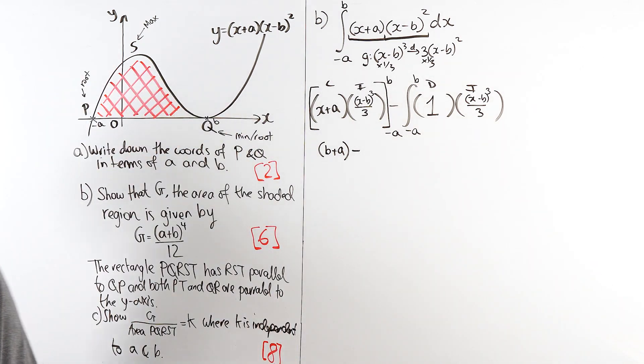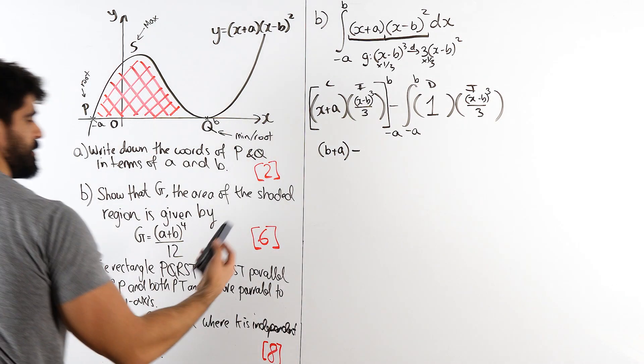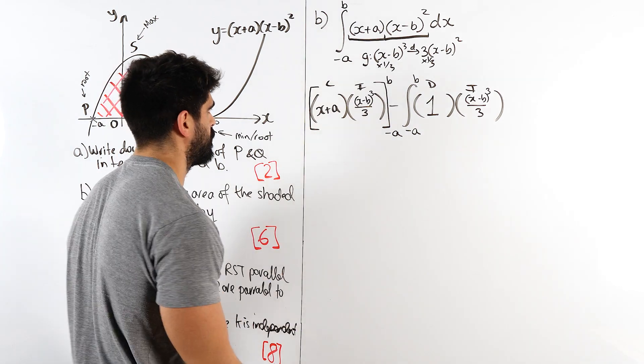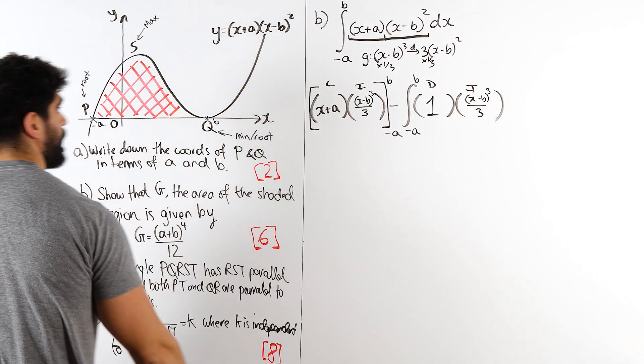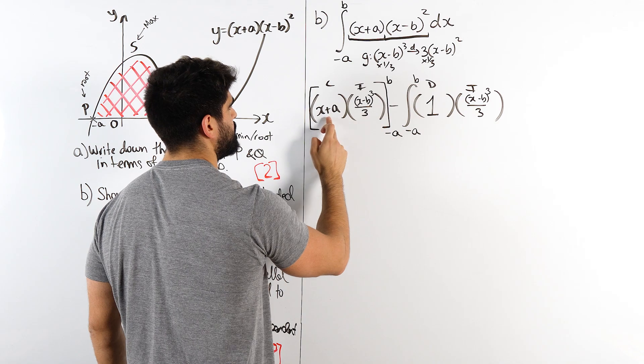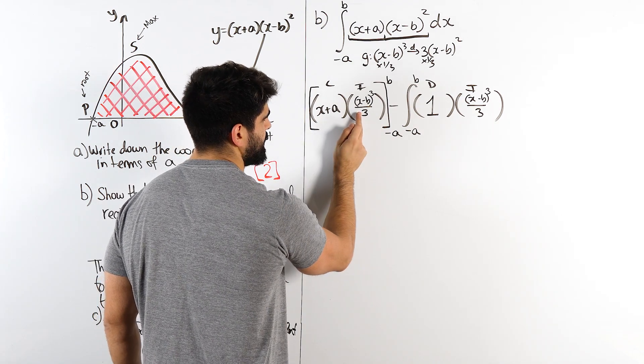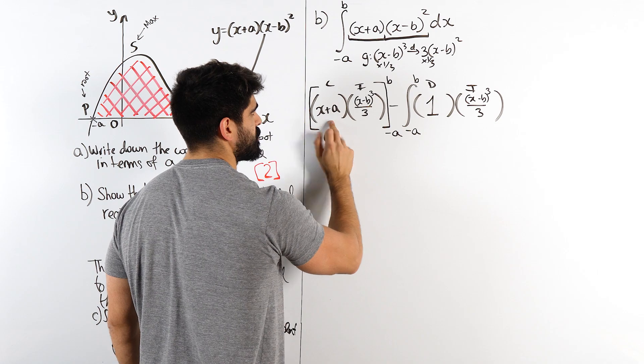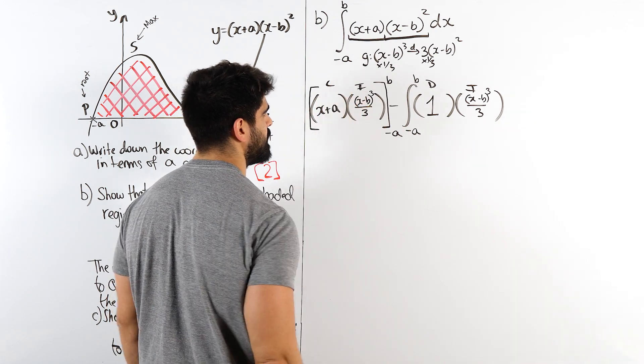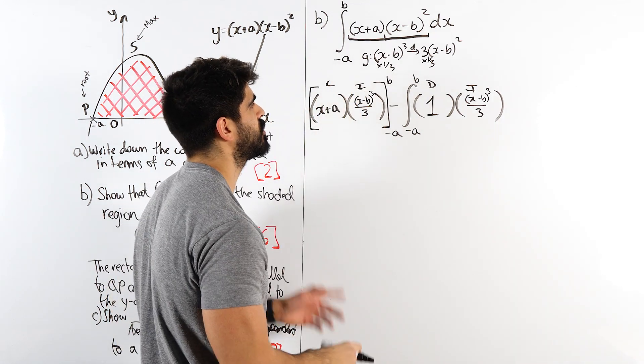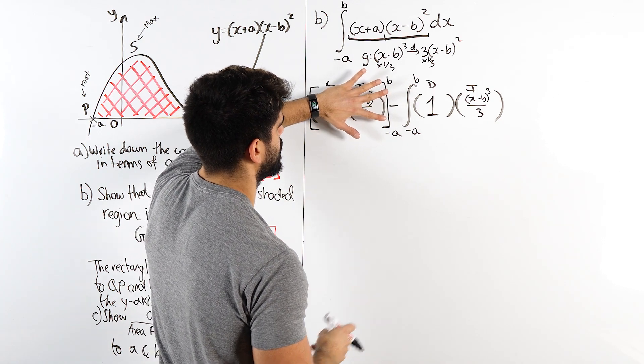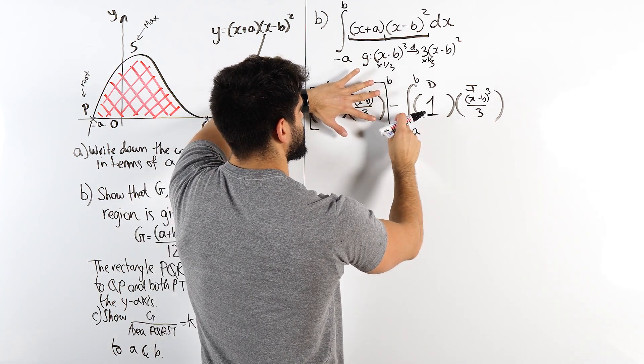This happens a lot when you're doing Advanced Extension Award and STEP questions. You start to bug out because it starts to get really messy. Subbing in b, that's cool, but that is just giving you zero. And here, that's just going to give you zero. So actually, by subbing in, we're just getting zero, which is great. So this is gone. We can ignore that.